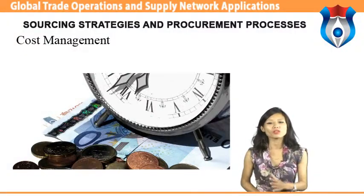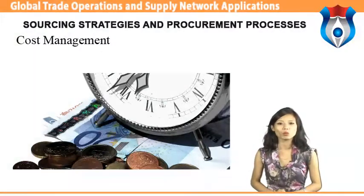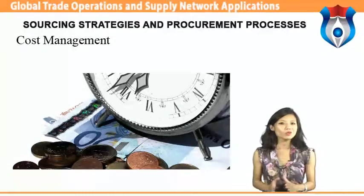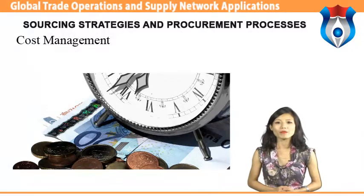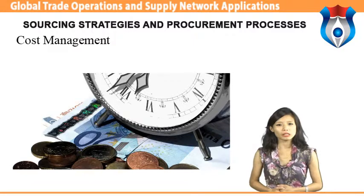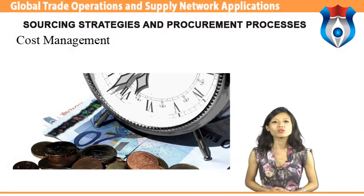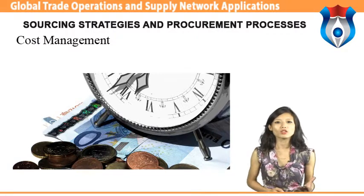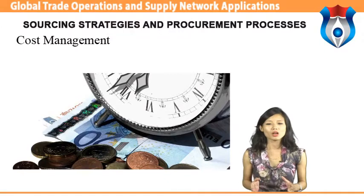Strategic sourcing benefits both buyers and suppliers. It benefits buyers because they can negotiate lower unit prices for high-volume purchases, reducing cost of goods sold and maintaining the ability to price products competitively. It benefits suppliers because they are able to sell a significant portion of their output, which makes planning easier and gives management long-term cash flow visibility. Companies can also use strategic sourcing to procure services — for example, a startup technology company could outsource non-core activities such as payroll processing, allowing management to focus on core activities such as product development and marketing.